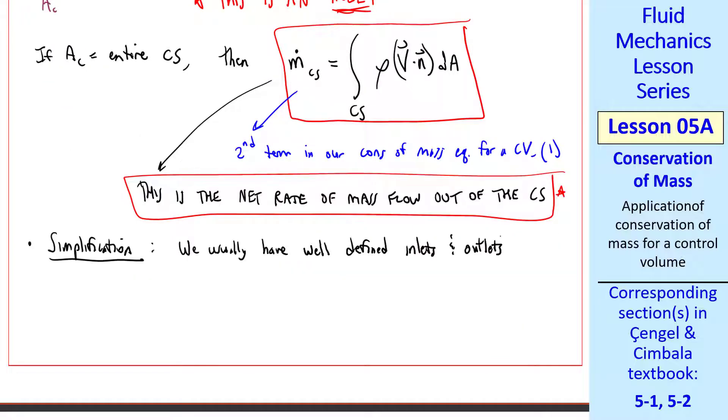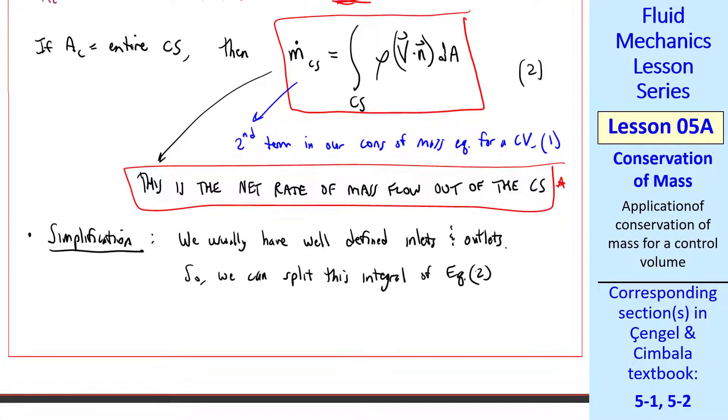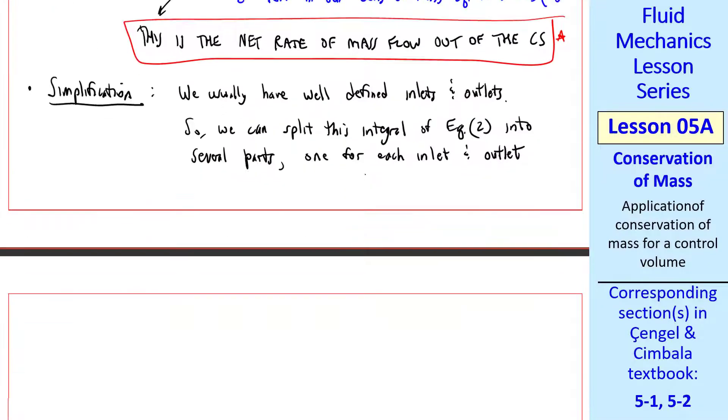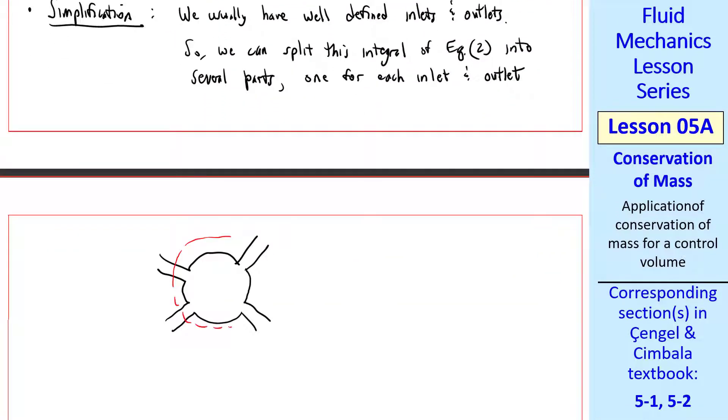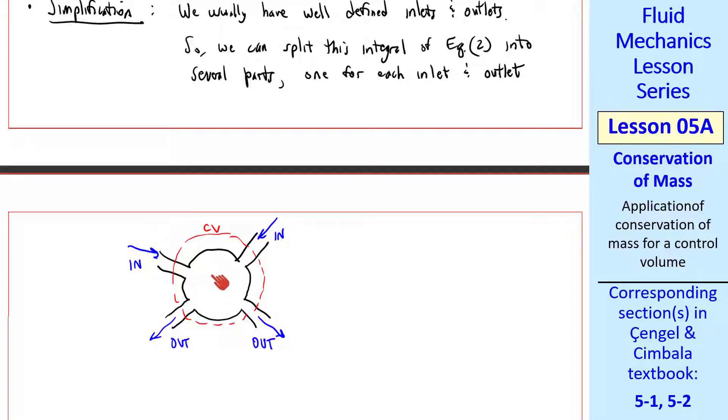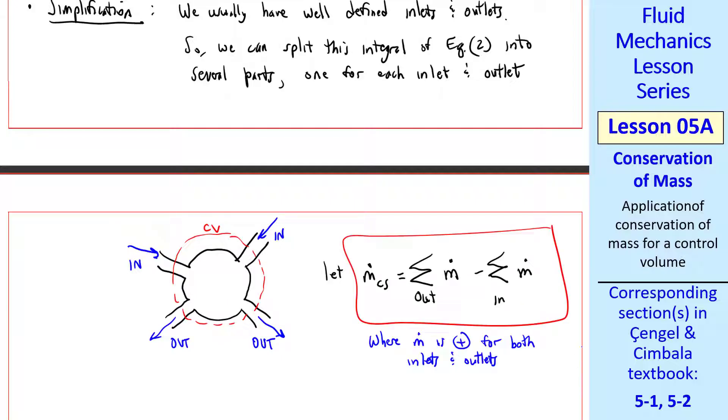In most of our problems, we usually have well-defined inlets and outlets. So we can split this integral of equation 2 into several parts, one for each inlet and outlet. For example, suppose we have a problem where we make a control volume cutting through these four pipes, where the top two are inlets and the bottom two are outlets. In a case like this, the good news is that we don't have to integrate over the entire control surface. Instead, we let m dot Cs equal the sum over all the outlets of m dot minus the sum over all the inlets of m dot, where we let m dot be positive for both inlets and outlets, and the sign is taken care of by putting in this negative sign for inlets.